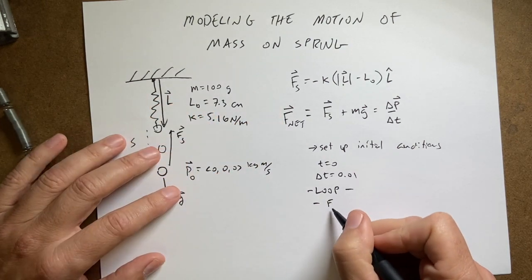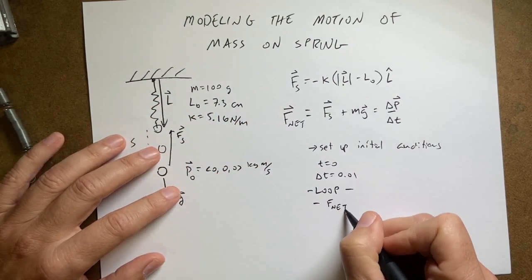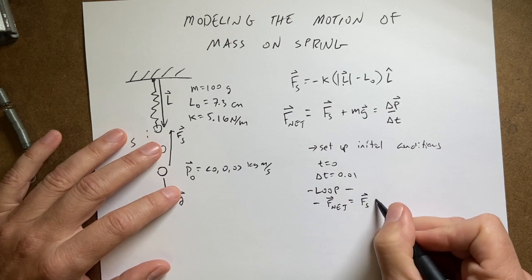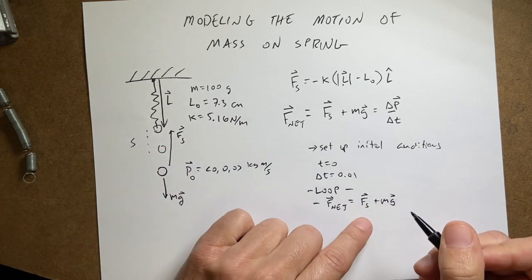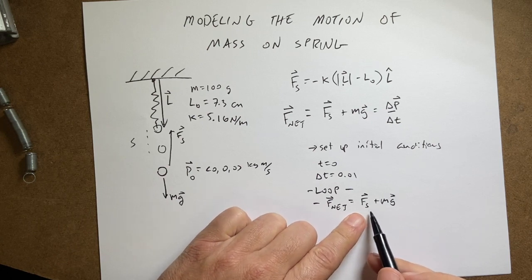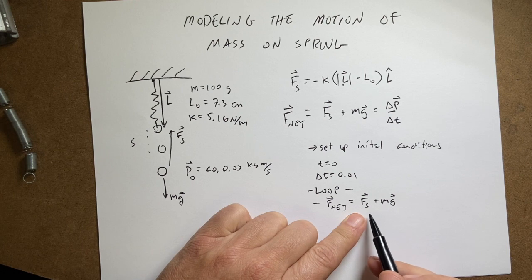So I'm going to say F net equals Fs plus mg. And so I'm going to need to know where the mass is and how far the spring is stretched to find this. So there's a little bit more steps here, but we're going to do that anyway.